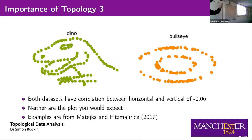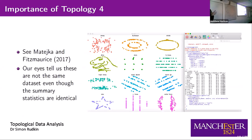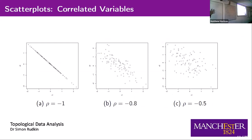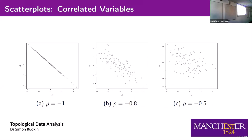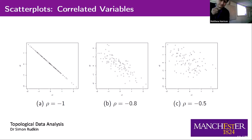We have two historic results pointing to the need to look at the shape of data. Adding a few more images from the Matejka and Fitzmorris dataset — and there's an R screenshot confirming the same summary statistics — both Anscombe and Matejka & Fitzmorris remind us that summary statistics are not sufficient for telling our story. We do scatter plots, talk about correlation and basic statistics, but we need to understand: is there a strong relationship or a weak one?